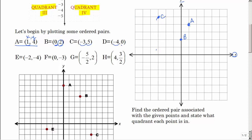Point D: go left four but don't go up or down any — one, two, three, four, that's D. When you have a zero coordinate you end up on an axis. Just be careful which way you're going — up, down, left, right — and always go side to side first and then up and down. Point E is negative two, negative four: go left two and then down four.